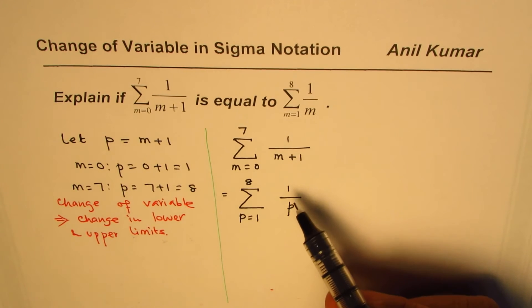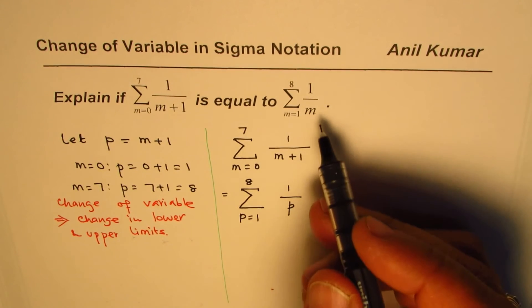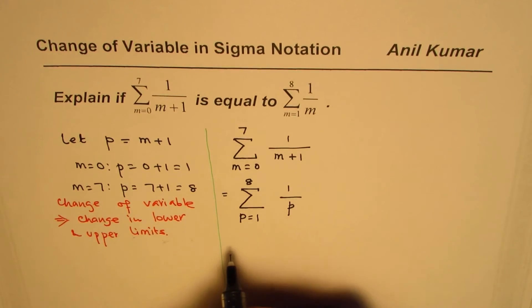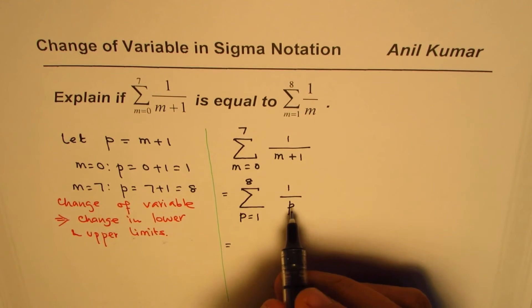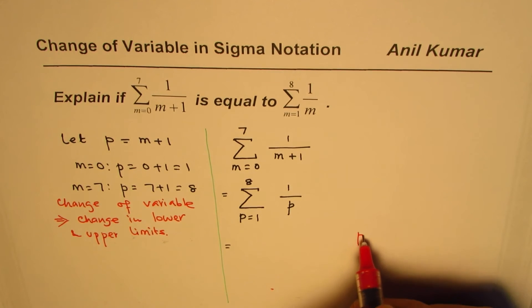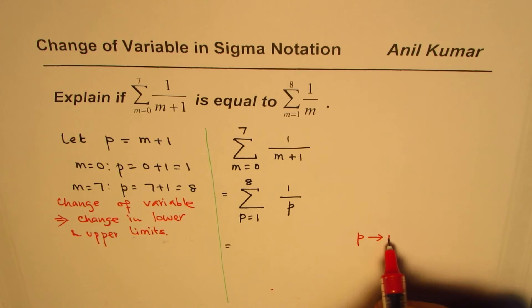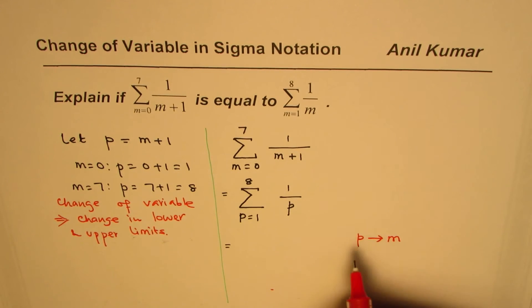Now here in this case, p is just a variable. We could give it any name, so we could also give it name m. That is interesting to see. We could also write m here, so we are just replacing at this stage p by any other variable. We could write k, anything. Let me put it m. If I write p as m, then if p equals 1, m equals 1. If p equals 8, m equals 8.